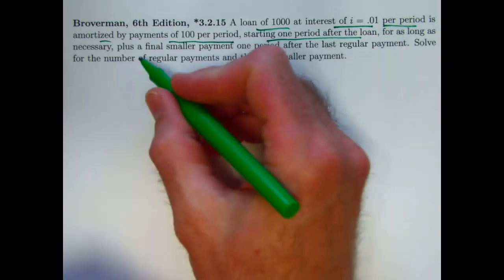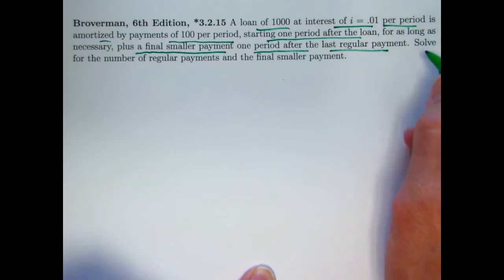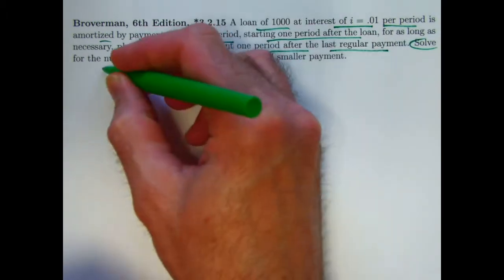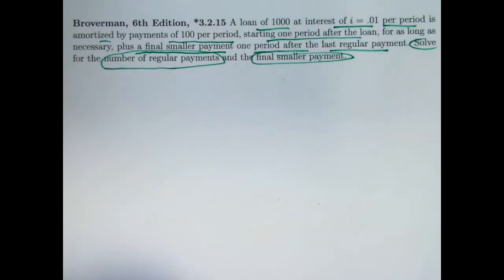For as long as necessary plus a final smaller payment one period after the last regular payment. Two things to solve for: the number of regular payments and the value of the final smaller payment.